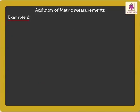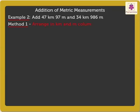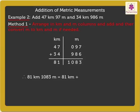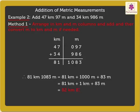Let's try another example. Using the first method, we arrange in kilometer and meter columns and add, then convert meters to kilometers and meters if needed. On adding, we get 81 kilometers 1083 meters. By converting 1083 meters, we get 81 kilometers plus 1000 meters plus 83 meters, which equals 81 kilometers plus 1 kilometer plus 83 meters, which equals 82 kilometers 83 meters.